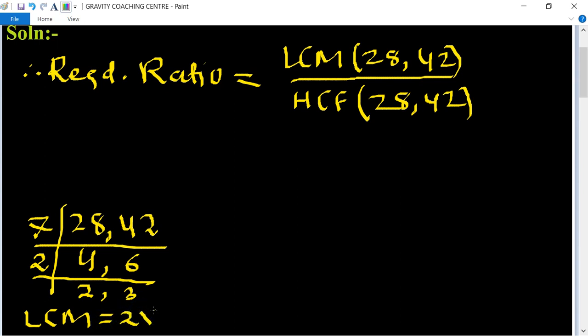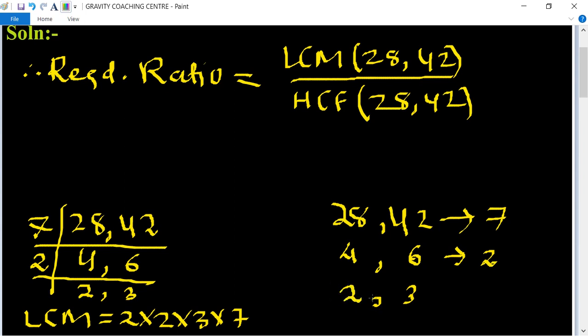2 multiply 2 multiply 3 multiply 7. And now we find their HCF. So 28, 42 - both the numbers divisible by table of 7: 7×4 is 28 and 7×6 is 42. And both the numbers are divisible by 2: 2×3 is 6 and 2×2 is 4. And 2 and 3 have no common factor other than 1. So HCF equals 7 into 2.